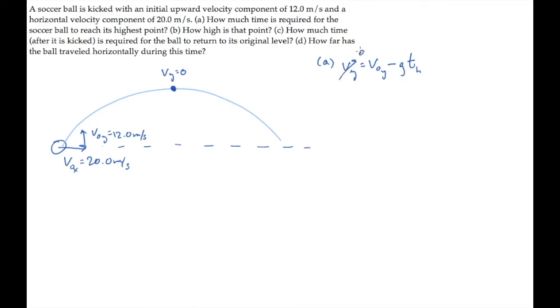The y component of velocity there is zero, so we can solve for t_h and substitute the values. V_0y is 12 meters per second. When you calculate, you find the ball spends 1.22 seconds rising to its highest point.